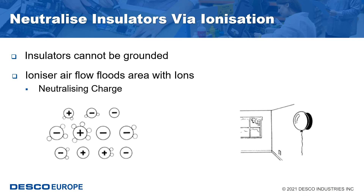As we have just identified, insulative items should be changed for ESD safe versions wherever possible. However, there are a number of process essential insulators that cannot be changed. So therefore the second basic principle of ESD control is to neutralize essential insulators with ionization.